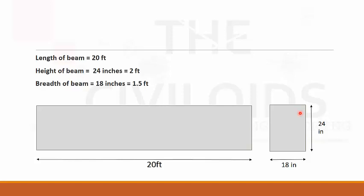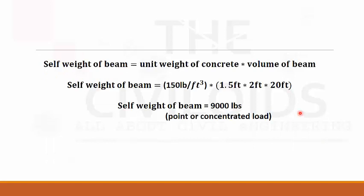According to the formula discussed earlier, self-weight of beam equals unit weight of concrete times volume of beam. Unit weight of concrete is 150 pounds per cubic foot, and volume is length times width times height. After calculation, we get 9000 pounds. The value obtained here is a point or concentrated load.